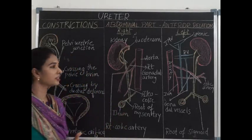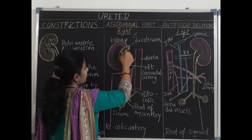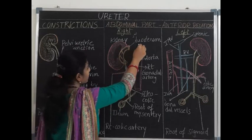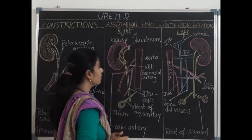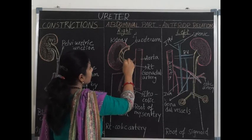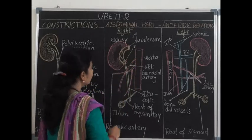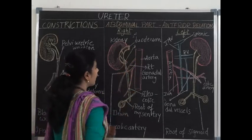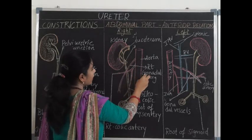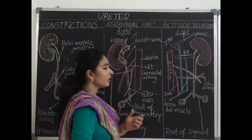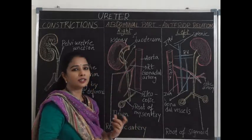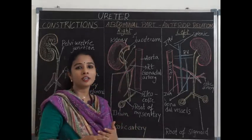Beginning with the anterior relations on the right side: near the hilum, the second part of the duodenum is related to the origin of the ureter. Further down, the ureter is crossed anteriorly by the third part of the duodenum. In the abdomen, it is then crossed by three arteries: first, the right gonadal artery — a branch of the abdominal aorta; in females it is the ovarian artery, in males it is the testicular artery. The clinical mnemonic is: 'water lies below the bridge.'